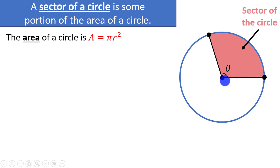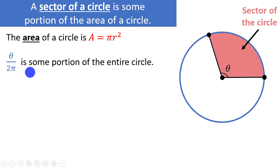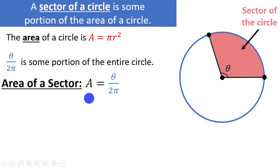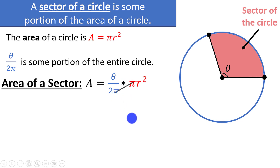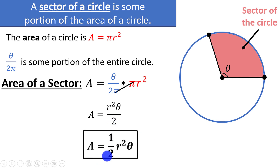The portion is determined by theta. Just like before, the portion of the circle is theta/(2π). So the area of a sector equals (theta/2π) × πr². The π's cancel, leaving r²θ/2, or more commonly written as (1/2)r²θ. Theta must be in radians since we used 2π to derive the formula.